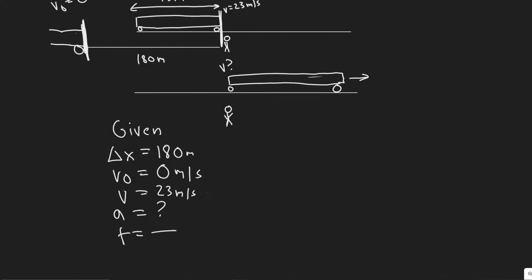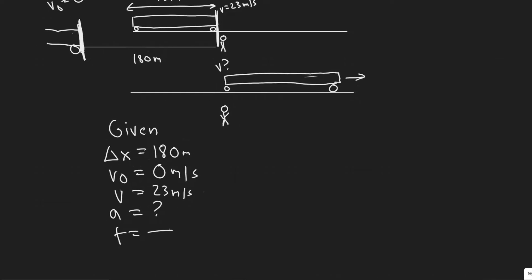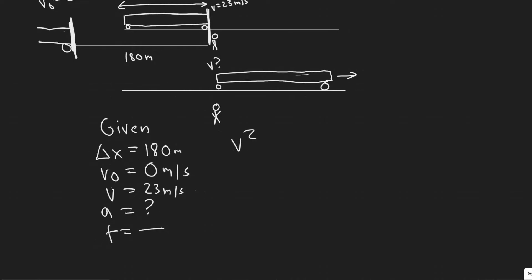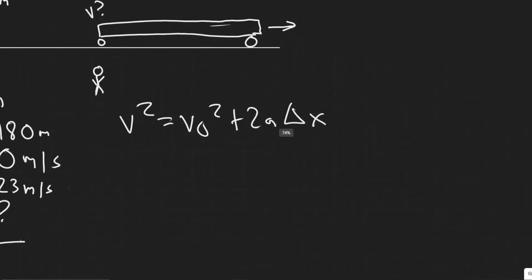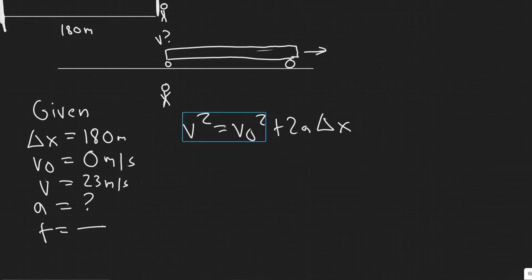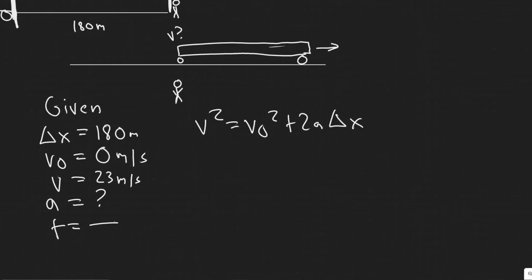The kinematic equation we're going to use is v² = v₀² + 2a·Δx. We're choosing this one because we know v, v₀, and delta x, and we need to solve for a. Plugging in: 23 squared equals 0 squared plus 2 times a times 180. So 529 equals 360a.